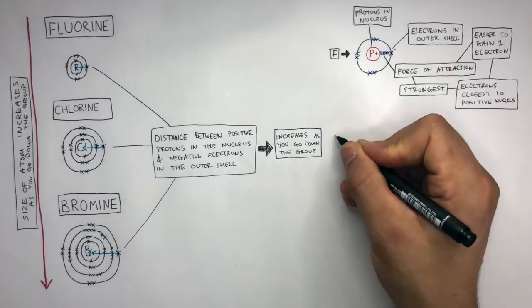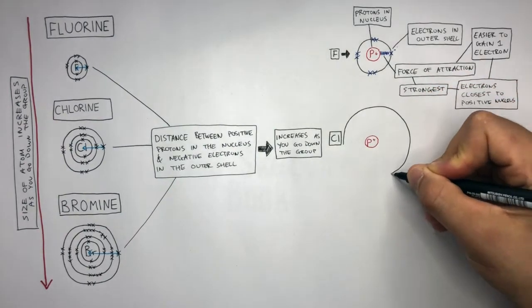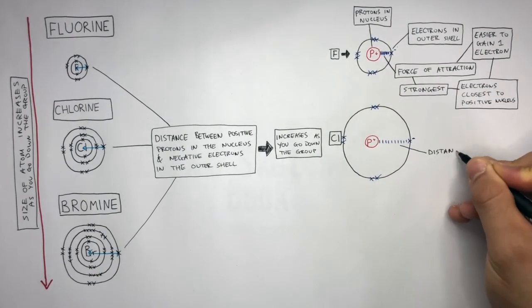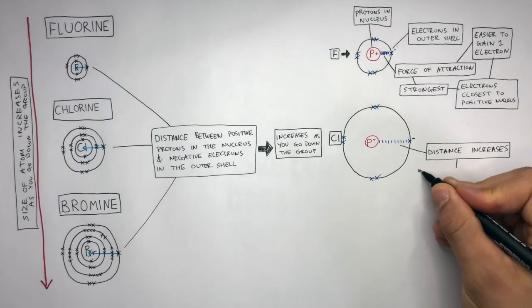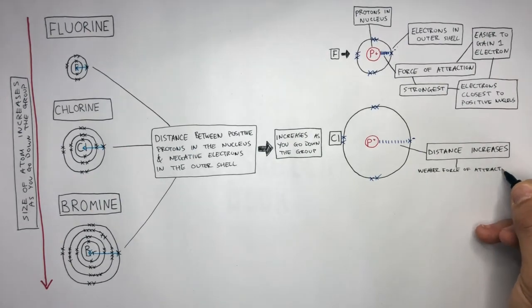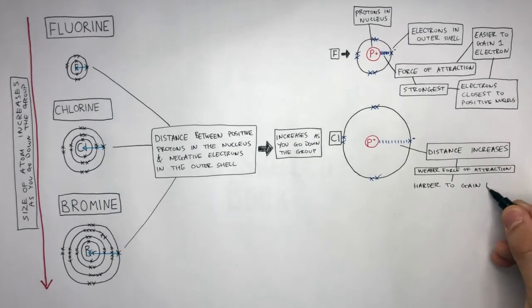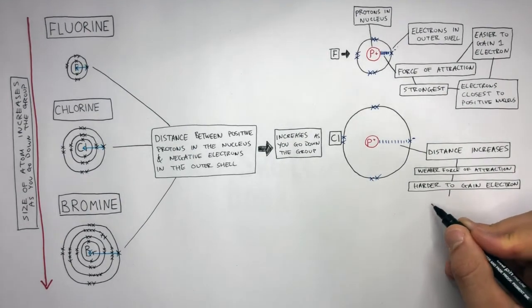Whereas chlorine has a bigger atom than fluorine, therefore the distance increases. This causes a weaker force of attraction, making it harder to gain an electron. This makes chlorine less reactive.